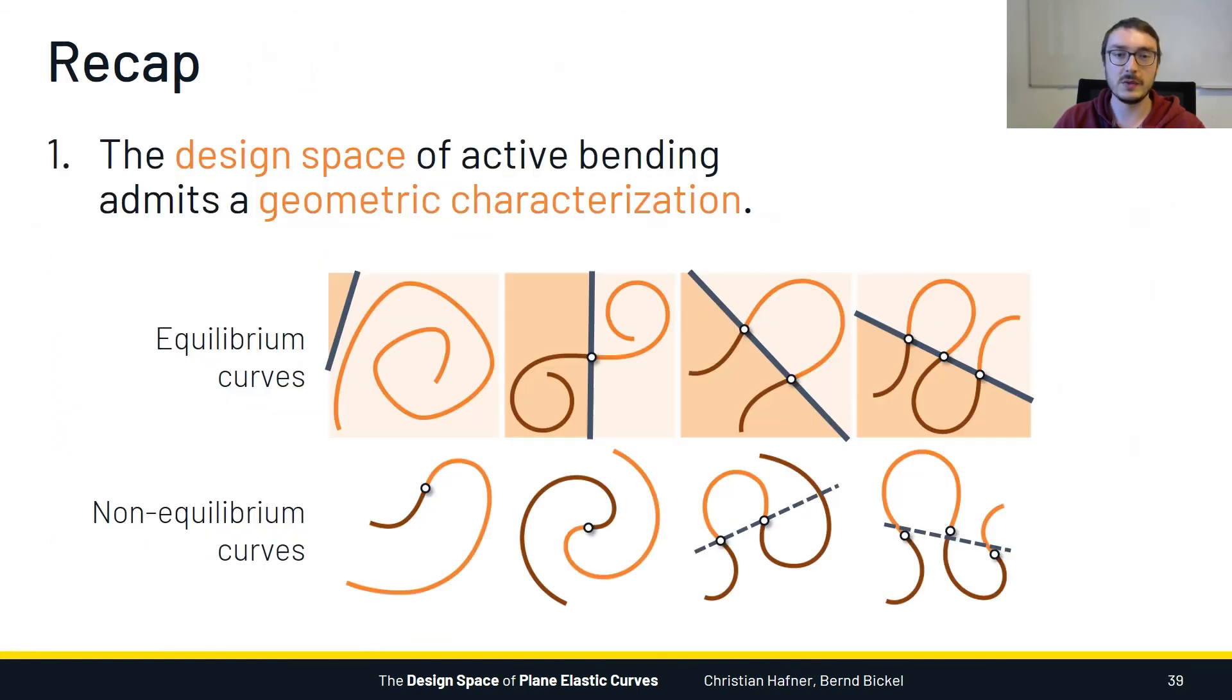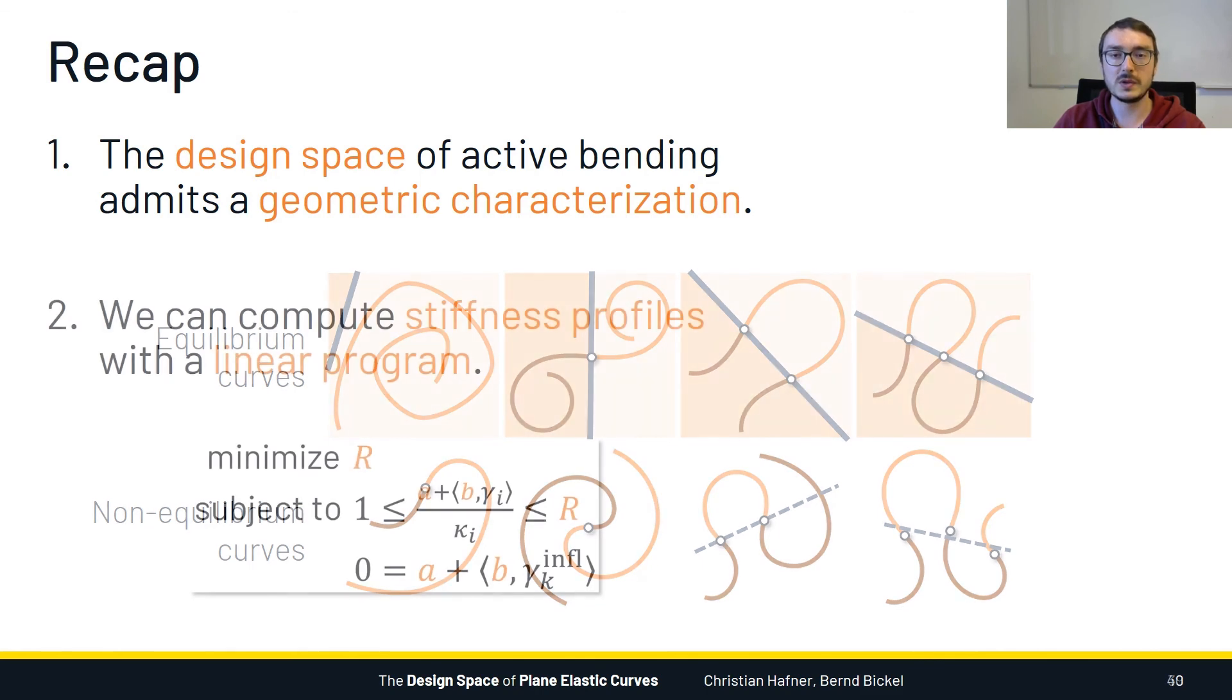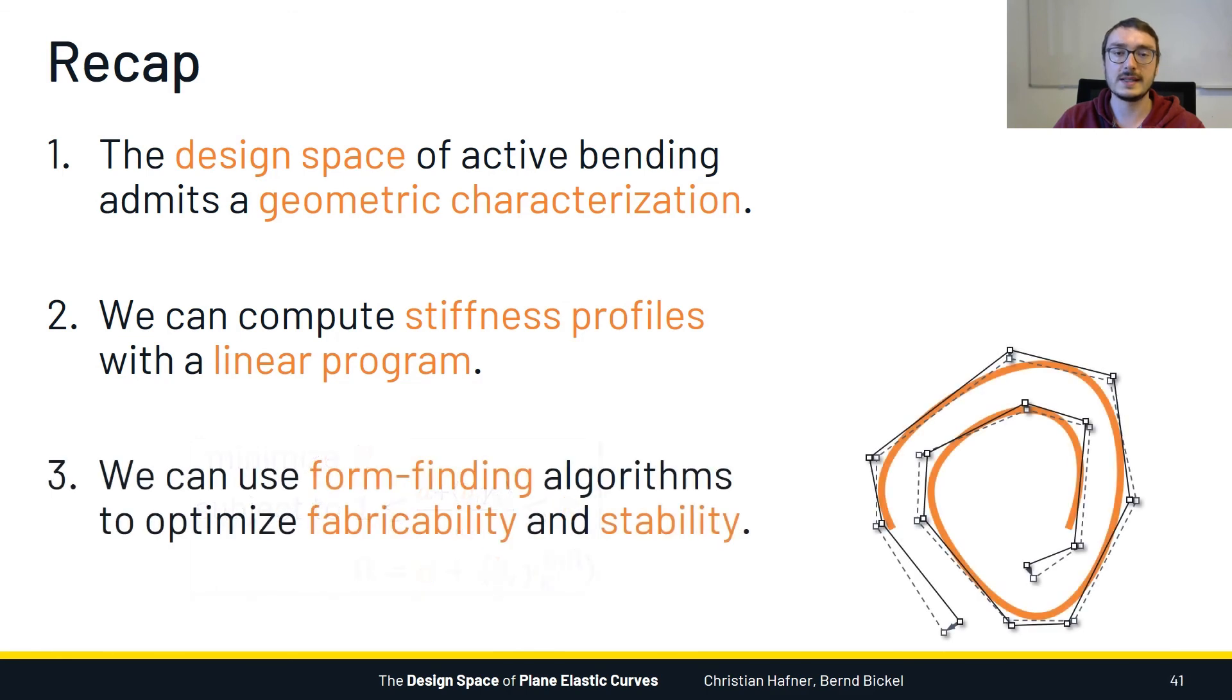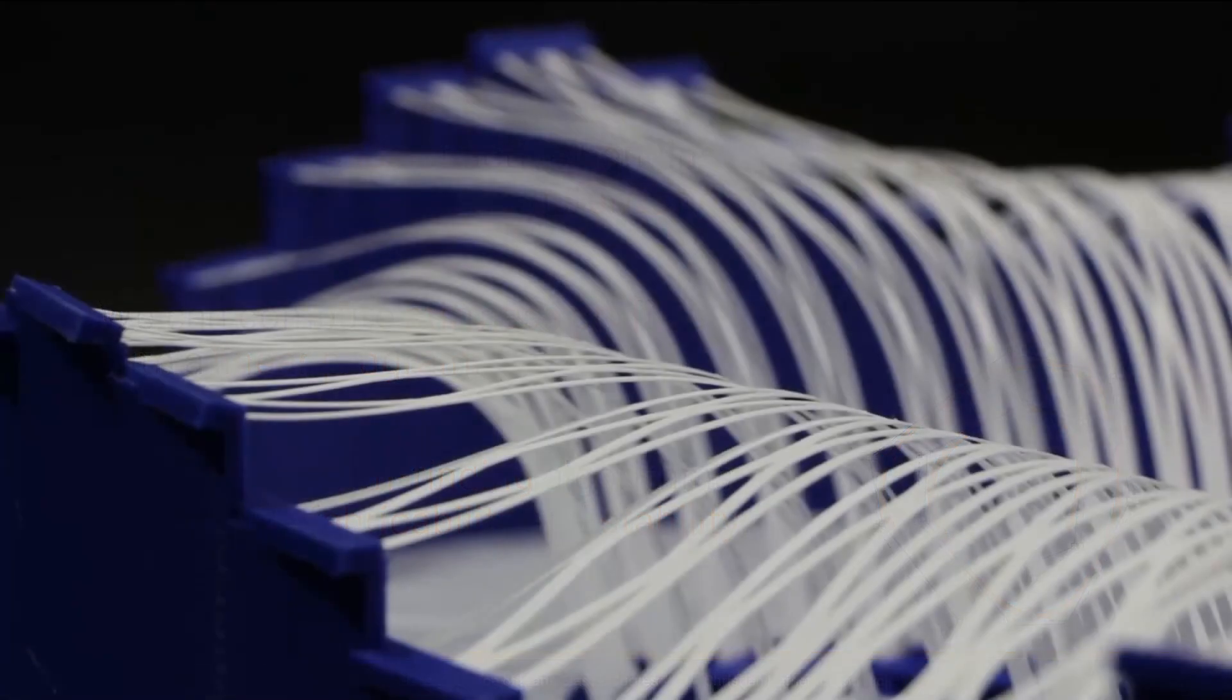Before I conclude, let me give you a quick recap. We saw that it is possible to geometrically characterize all plane curves that can be achieved with active bending. The deciding factor is the existence of a line that intersects the curve exactly in its inflections. Then we looked at how to compute stiffness profiles for curves in this design space, and we devised a linear program that does this within about 1 millisecond. Finally, we improved curve designs in order to make them more easily fabricable or to regain their stability. And with this, I'd like to thank you very much for your attention.